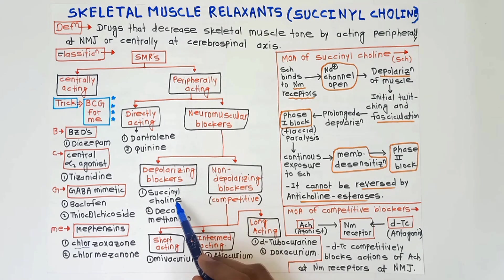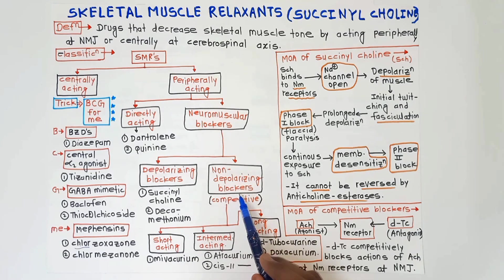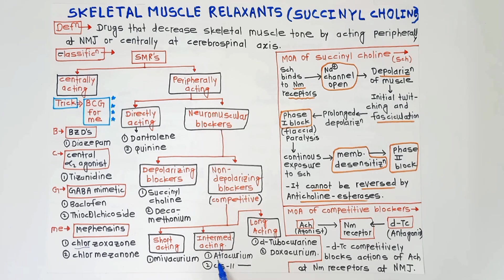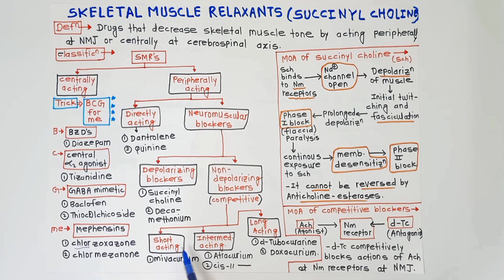Depolarizing blockers are succinylcholine and decamethonium. Non-depolarizing blockers are also called competitive blockers and are further divided into short-acting, intermediate-acting, and long-acting. Short-acting: mivacurium. Intermediate-acting: atracurium and cisatracurium. Long-acting: d-tubocurarine and toxacurium. A helpful trick: each group (short, intermediate, long) has one 'curium' drug.